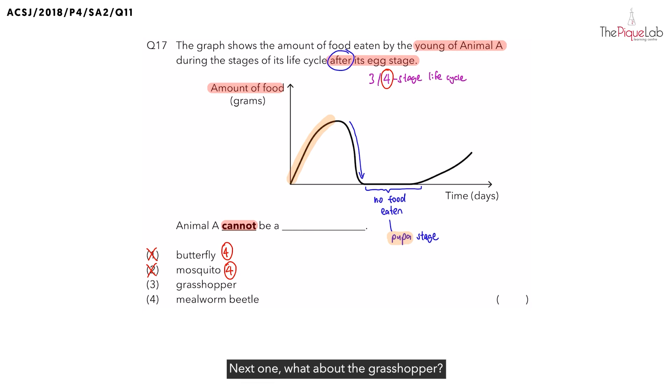Next one, what about the grasshopper? How many stages does it have? The grasshopper has a three-stage life cycle. And since it has a three-stage life cycle, can animal A be the grasshopper? No. So the answer is option three.